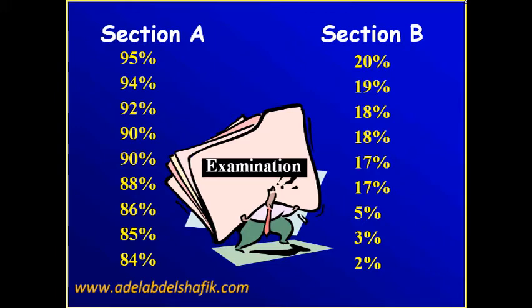Suppose we get an examination of a group of students and their numbers, the number they get in this exam, were quite high. And we start having this group arrange their number from the highest to the lowest number and you get a range of numbers, say, from 95 percent down to 84 percent.